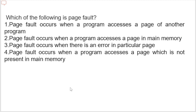Which of the following is a page fault? Options include: page fault occurs when a program accesses a page of another program, a page in main memory, an error in a particular page, or a page not present in main memory. The correct option is: page fault occurs when a program accesses a page which is not present in main memory. This results in a miss, and the CPU has to access the missed page from secondary memory. If the number of page faults is very high, the effective access time will become very high.